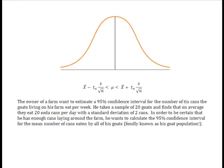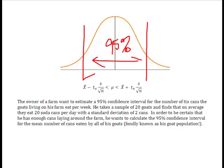Alright, we've got an owner of a farm who wants to estimate a 95% confidence interval. Remember, 95% confidence interval simply wants to know the lower and the upper range between which 95% of the data will fall. And what he wants to know is, he wants the 95% confidence interval for the number of tin cans that the goats living on his farm eat per week. So, he goes out, he randomly samples 20 goats, finds that on average they eat 20 soda cans per day, and since he's the one who drew the sample, he's calculated the standard deviation to be two cans.